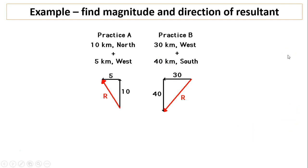Let's use that to find magnitude and direction of the resultants of practice A and B. For A, you have two vectors: 10 kilometers north and 5 kilometers west. The two are perpendicular to each other, so we can use Pythagorean theorem. R equals square root of A squared plus B squared. Substituting the numbers: 5 kilometers squared plus 10 kilometers squared. Vector addition is commutative, so it doesn't matter which one goes first. R equals 11 kilometers.